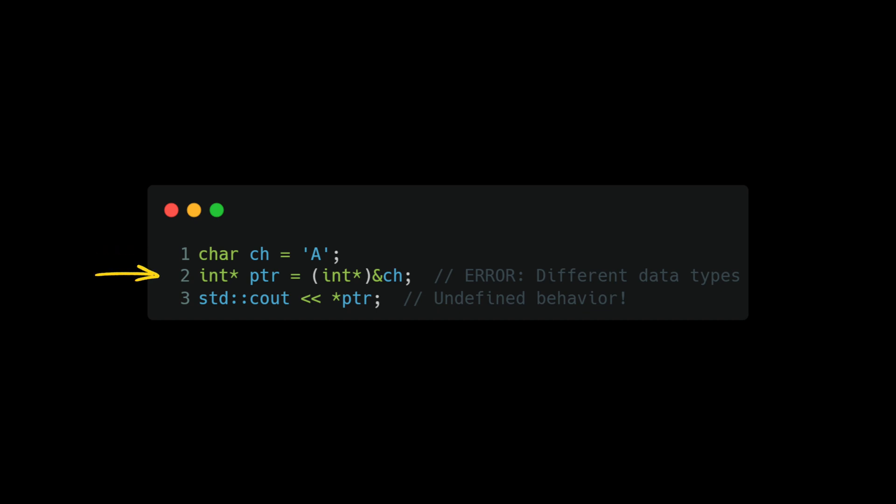For example, defining a character `a` but assigning it to an integer pointer produces undefined behavior when you try to read the output. To avoid these issues, make sure you are pointing to the correct location and using the correct type for your pointer. That's enough for today — until the next video, good morning, good afternoon, and good evening. Bye!